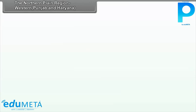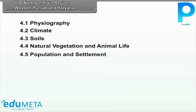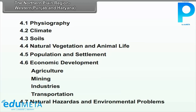Chapter 4: The Northern Plain Region - Western Punjab and Haryana. We will study the following points in this chapter: Physiography, Climate, Soils, Natural Vegetation and Animal Life, Population and Settlement, Economic Development (which includes Agriculture, Mining, Industries, Transportation), Natural Hazards and Environmental Problems.